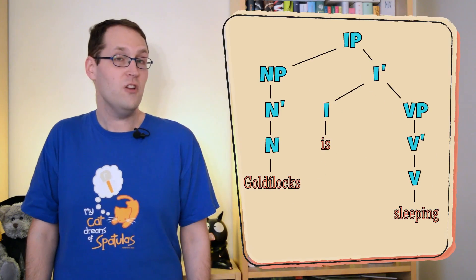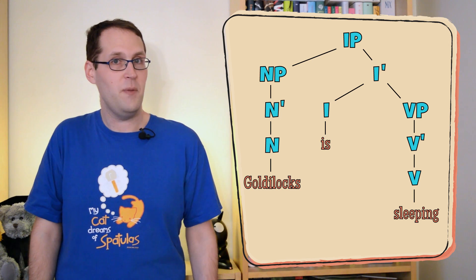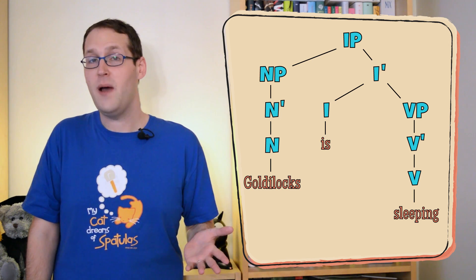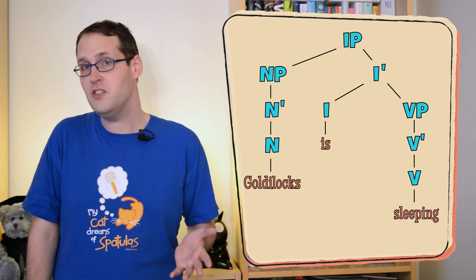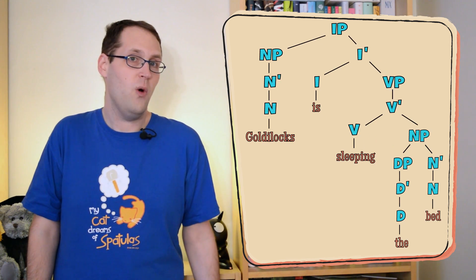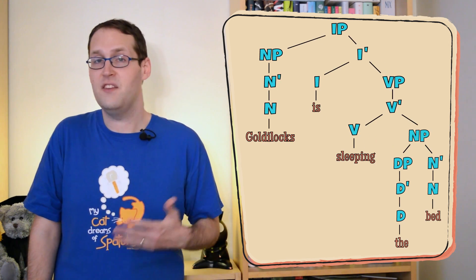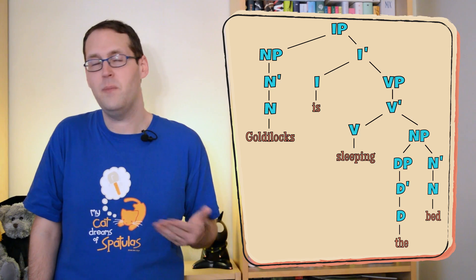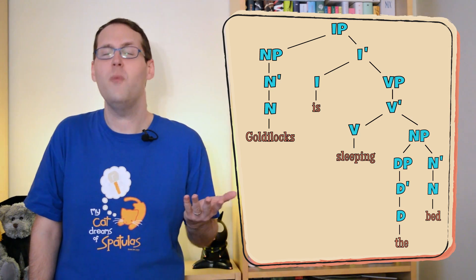Not only are we allowed to say 'Goldilocks is sleeping,' if we try to add another noun phrase like 'the bed,' we're back to square one — a sentence that fits our template but that just has no business at all calling itself English. It seems like what pieces we want and don't want in our sentences depends on what words we start out with.